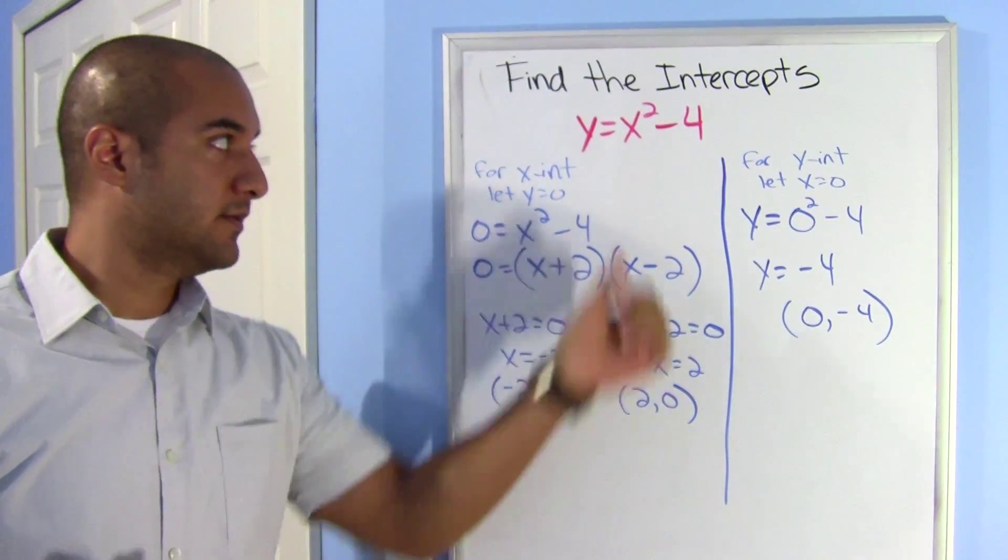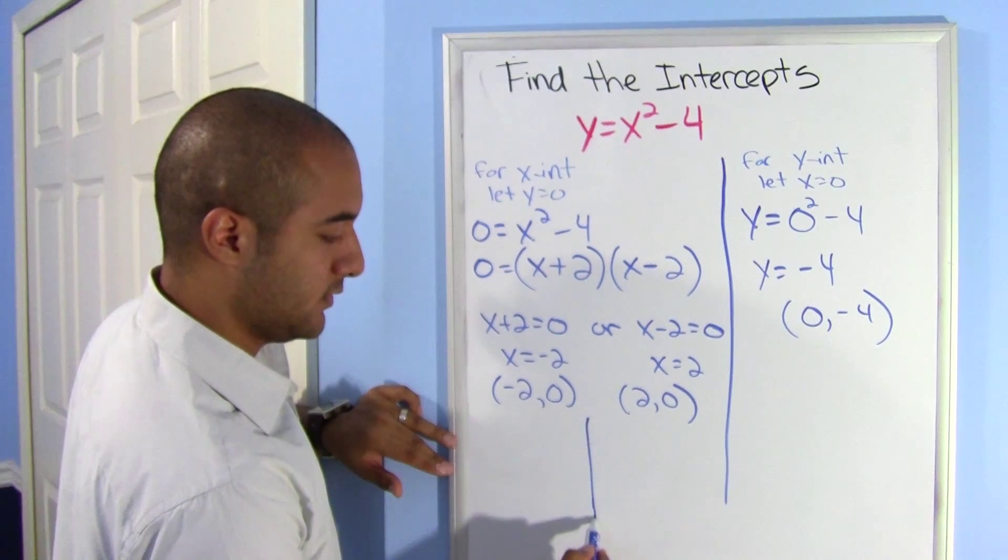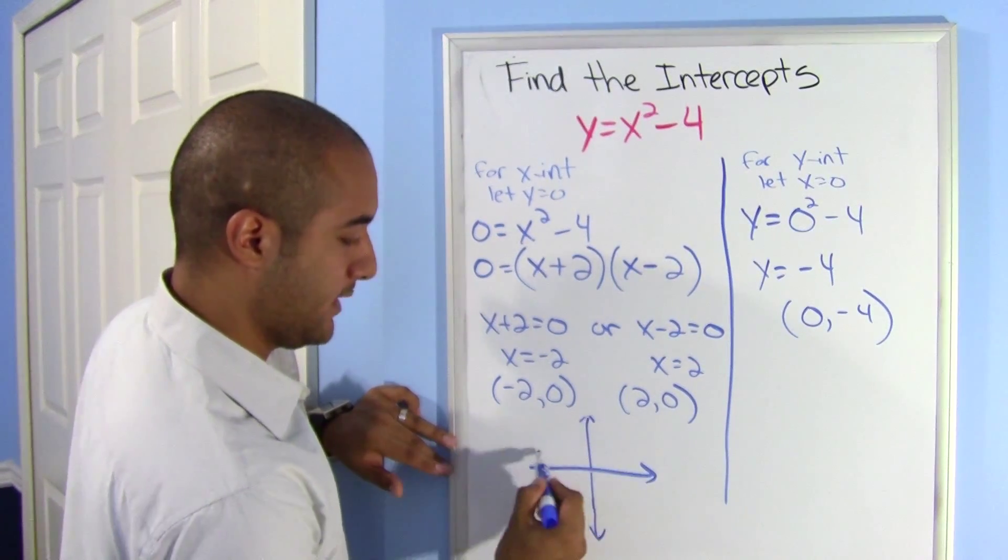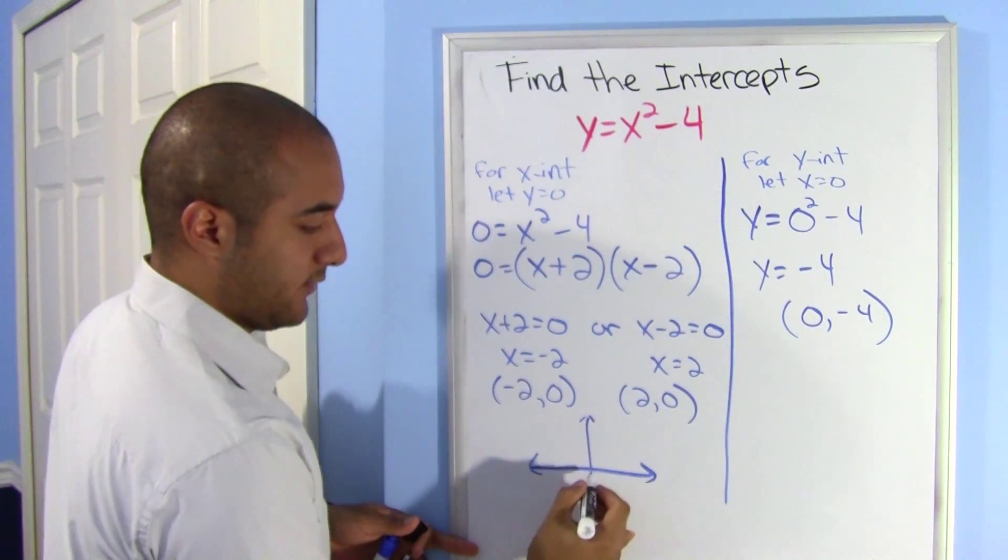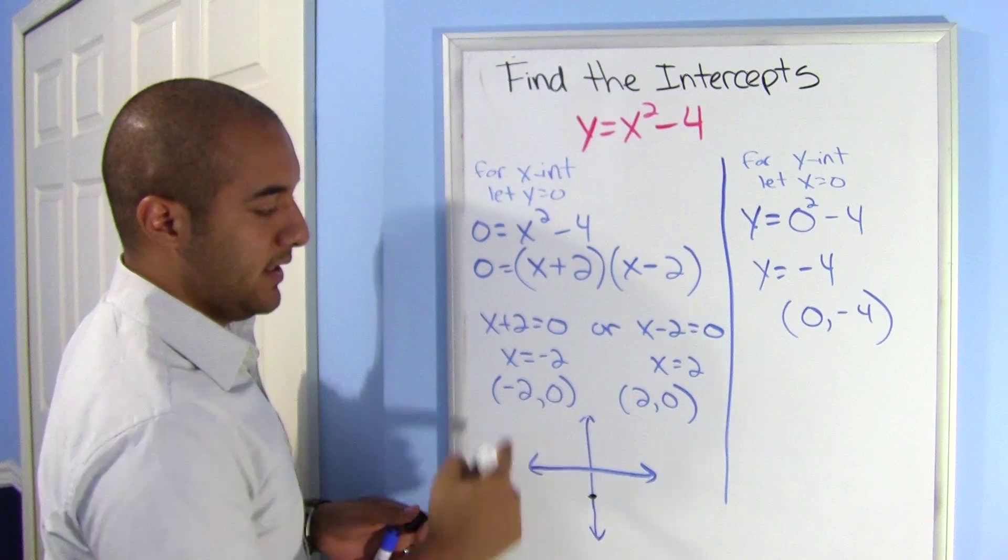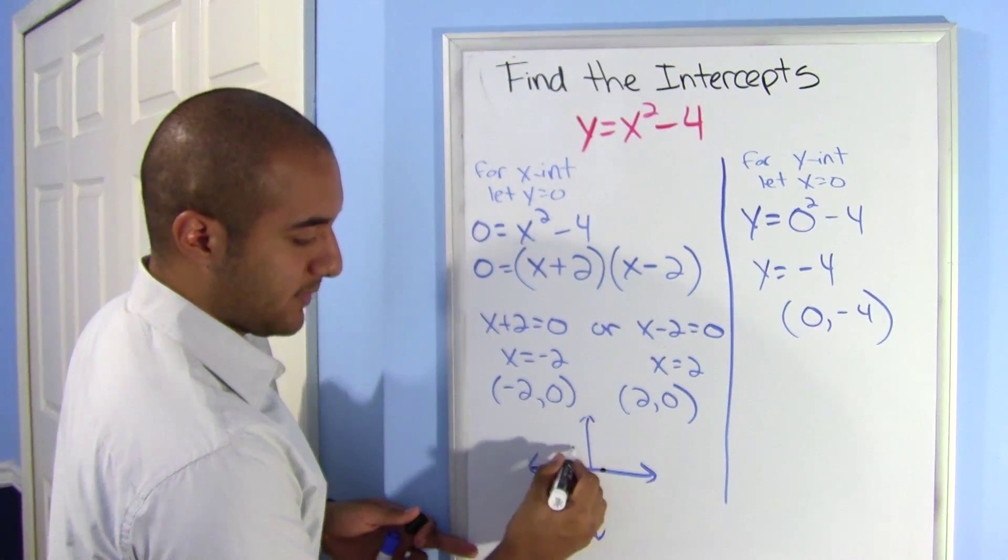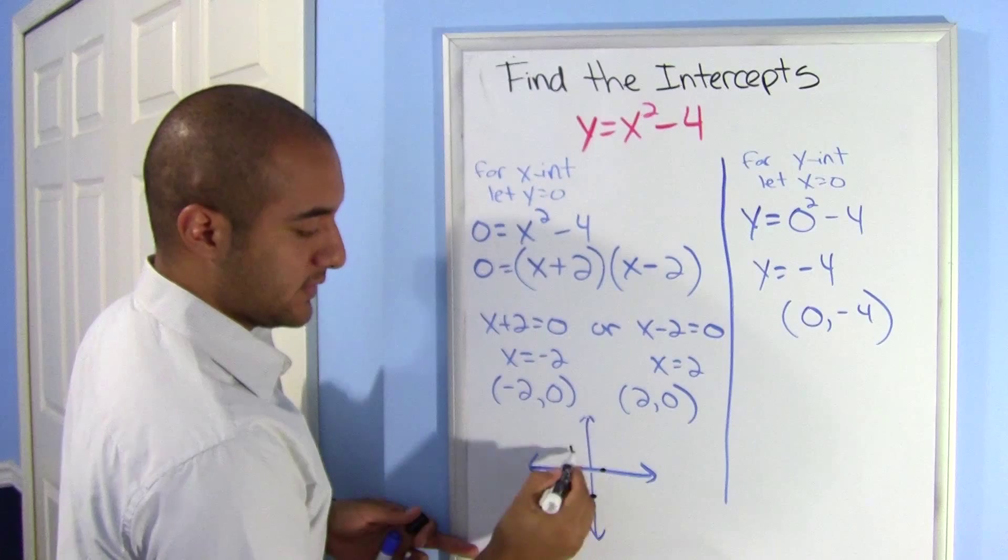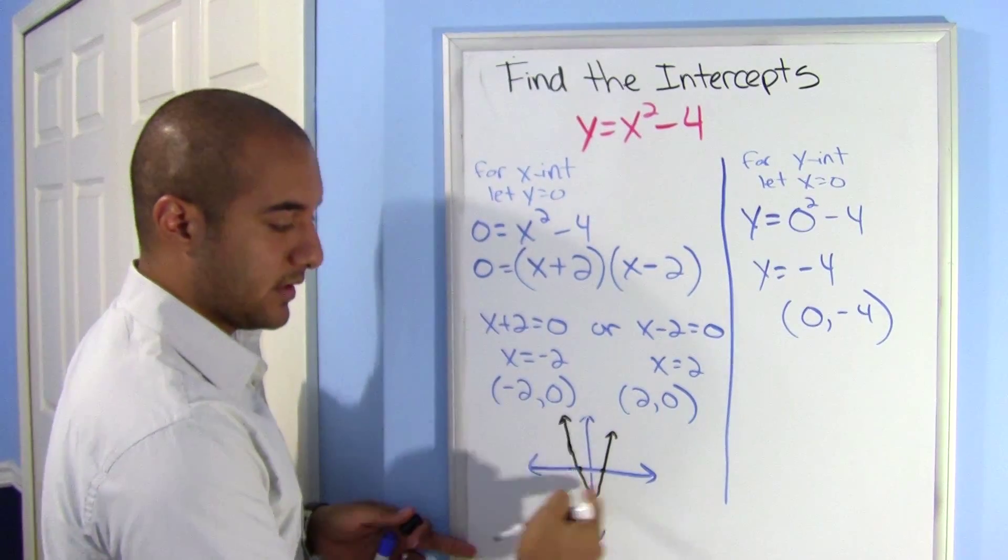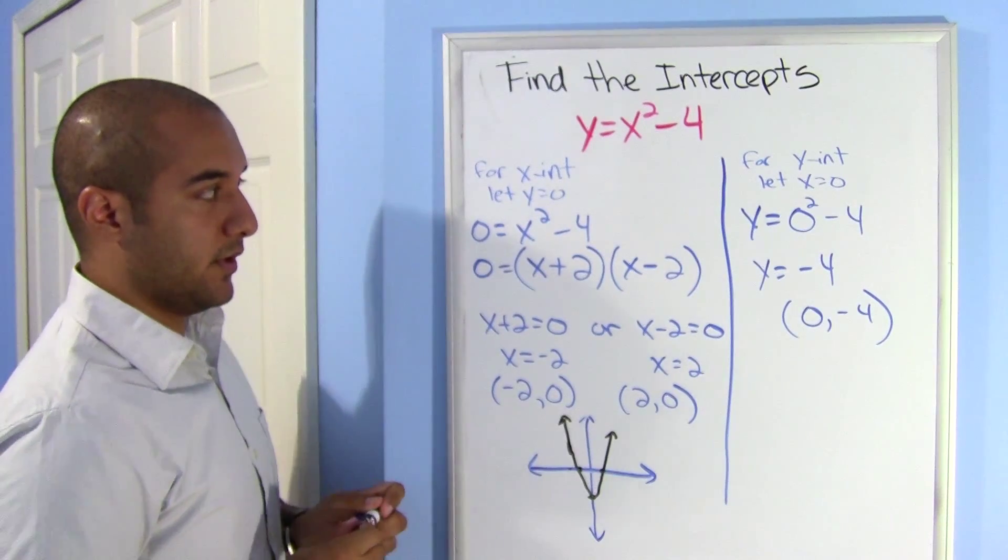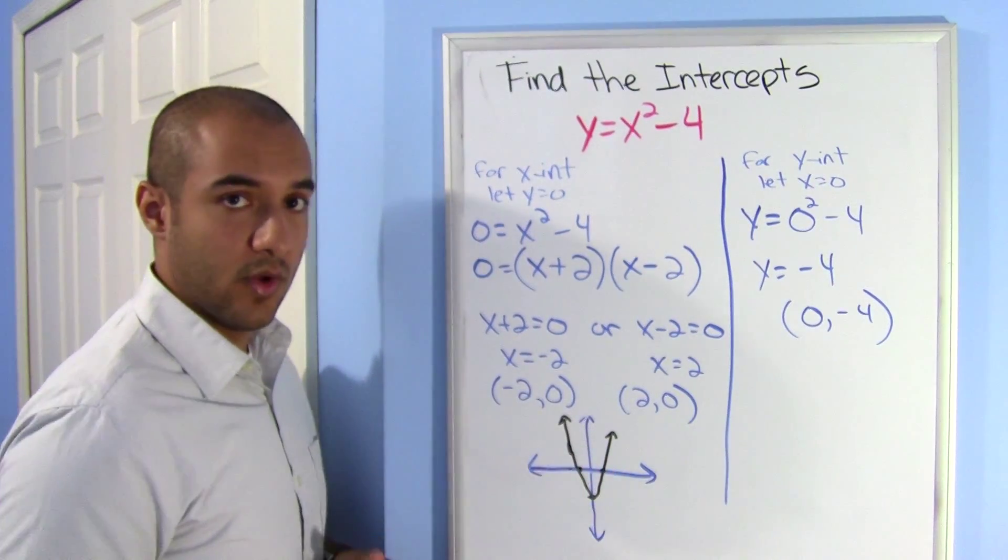Now, why two answers here? If you actually want to graph this, it would look, I'm just going to make a quick sketch, it would look like this. My y-intercept is at 0, negative 4, so right around here is my y-intercept, and you have two of them. So this means that it crosses it twice, here and here. So my parabola, remember it's squared, so this is a quadratic, this is a parabola, does this. Okay? And that does make sense because it comes back up. So there are cases here where you can get two x-intercepts, or two y-intercepts.